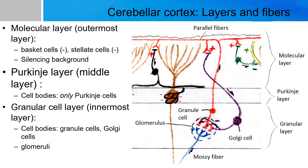The cerebellar cortex is made up of gray matter that surrounds the white matter at its core. The cortex can be divided into three layers: an outer molecular layer, the middle Purkinje layer, and an inner granular layer.